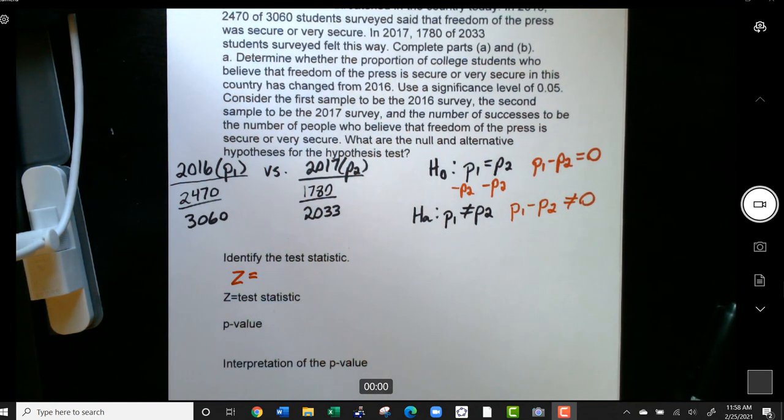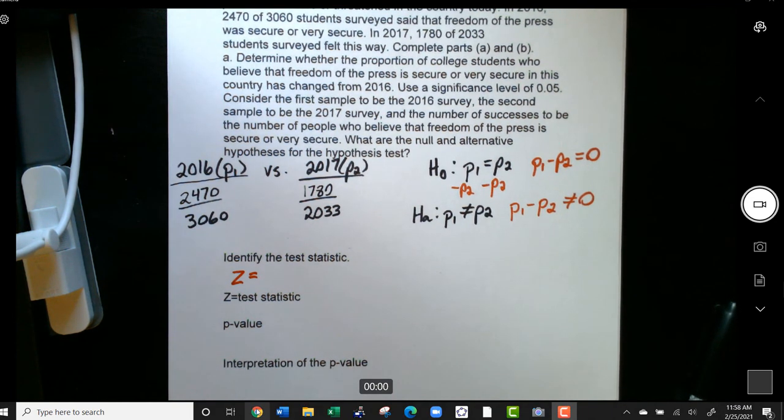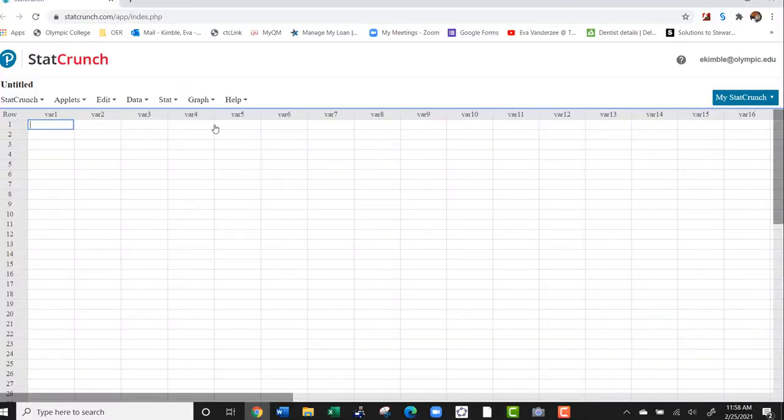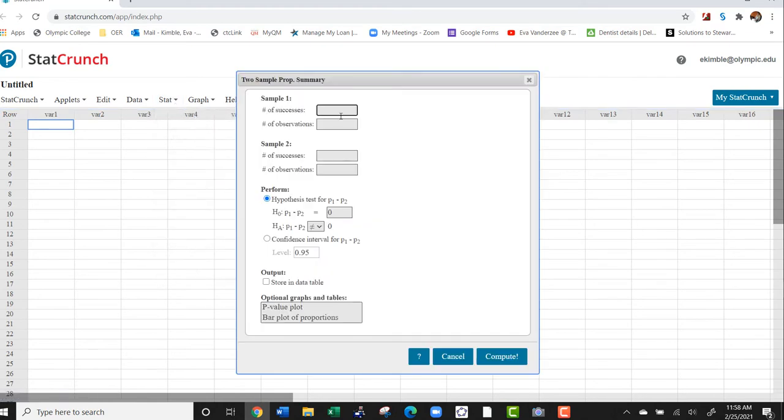So to do that, we're going to head over to StatCrunch since this is pretty math-heavy and honestly not really worth doing by hand. So you're going to go to Stat, Proportion Stats. We're doing two samples now because we have P1 and P2, and we're doing it with a summary. Now, sample one, you want to make sure that's your population one.